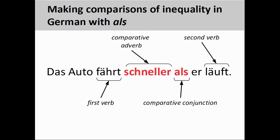In addition to comparing the characteristics of nouns, comparisons of inequality can be used to illustrate differences between the activity of these nouns. In the sentence 'das Auto fährt schneller als er läuft' — the car drives faster than he runs — the focus of the comparison is not on the nouns themselves, but rather the manner in which they move; more precisely, the speed of this movement. We need, therefore, a comparative adverb, 'schneller', to distinguish between the car driving and the person running. As these two activities are different, the verb in the comparative clause cannot be removed through comparative deletion. Where the activity in both clauses is identical, we would be able to delete the second verb.